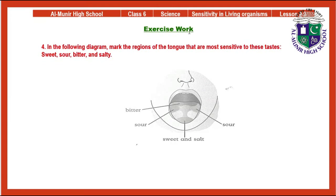Question 4 — in the following diagram, mark the regions of the tongue that are most sensitive to these tastes: bitter, sour, sweet and sour, and sour.